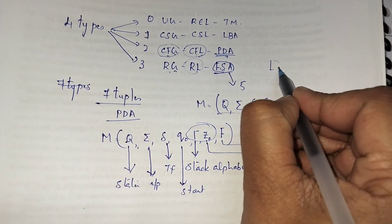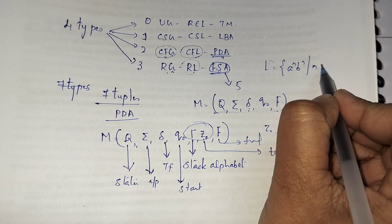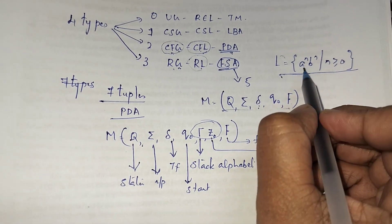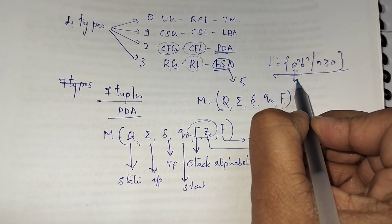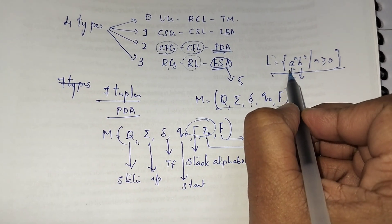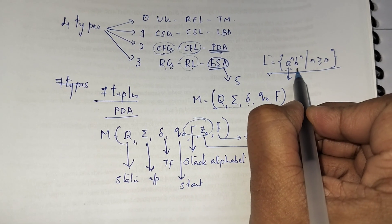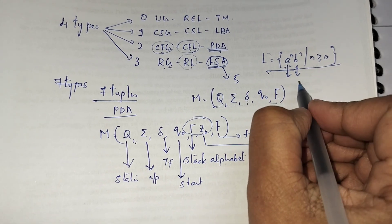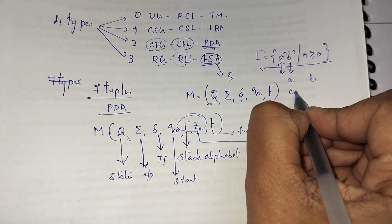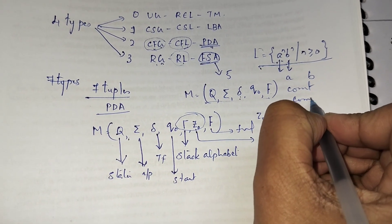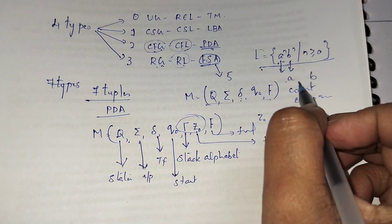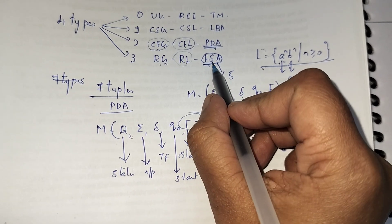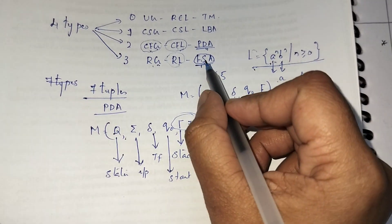Consider the language L = {aⁿbⁿ | n ≥ 1}. This type of language is not regular. Here we need n number of a's and n number of b's — if there are 3 b's there must be 3 a's, so we need to store, count, and compare the number of a's and b's. But storing, counting, and comparing is not possible for finite automata since it has limited memory.